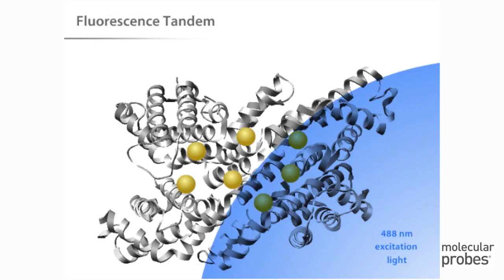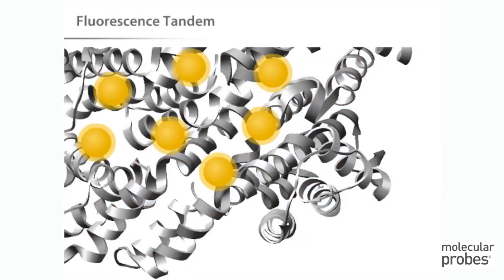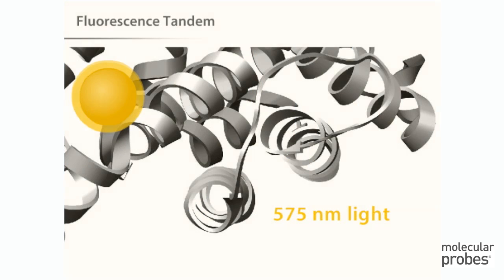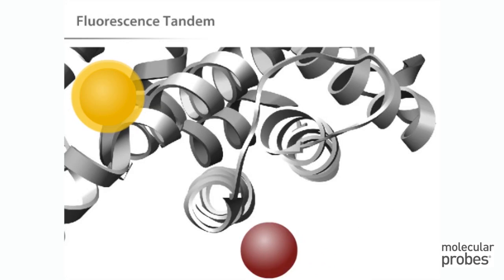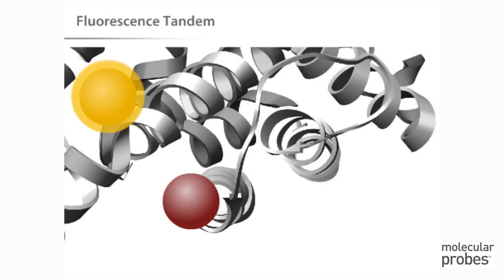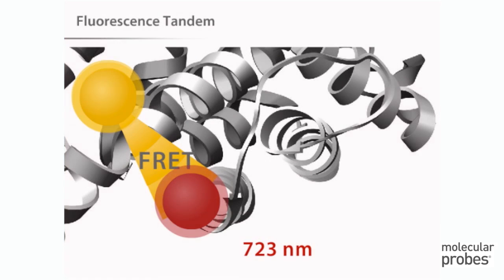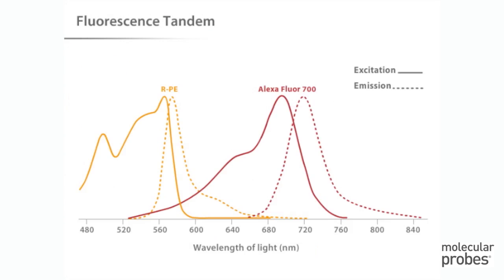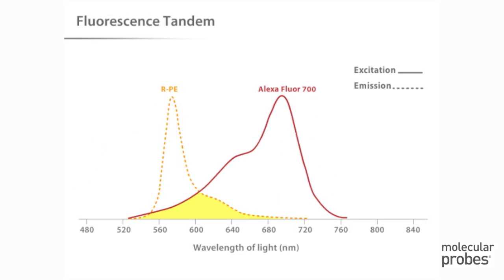Here you see 488 nanometer light exciting RPE. Normally, RPE would emit light around 575 nanometers. However, because Alexa Fluor 700 molecules have been attached to the RPE in relatively close proximity to the RPE chromophores, the excited RPE causes fluorescence resonance energy transfer, or FRET, to the Alexa Fluor 700 dye. The Alexa Fluor 700 dye then emits light around 723 nanometers in the red part of the spectrum.